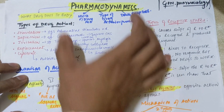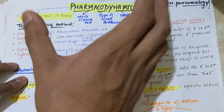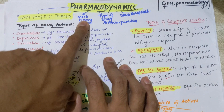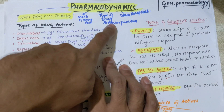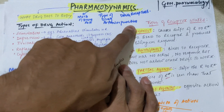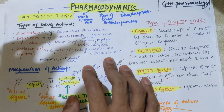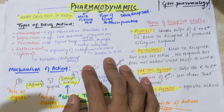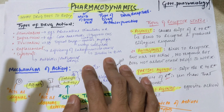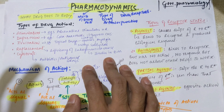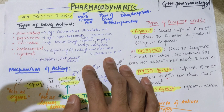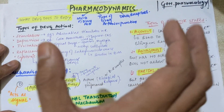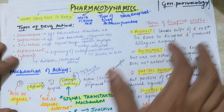The meaning of pharmacodynamics is what does the drug do to the body. In this we will be studying the mechanism of drug action, type of drug action, what are the drug receptors, what are the pharmacological effects on the body, the indications for use of each specific drug, and the adverse effects — that is the side effects of the drugs. All these concepts come inside pharmacodynamics.